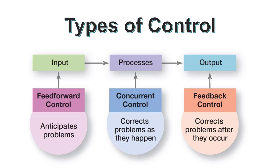We have three different types of control: feed forward, concurrent, and feedback. These are based on the timing of when control takes place. Feed forward control focuses on preventing future problems by collecting performance information about past performance and planning to avoid pitfalls and roadblocks prior to starting any new task or project.